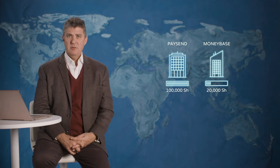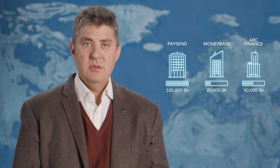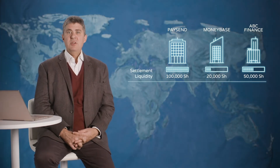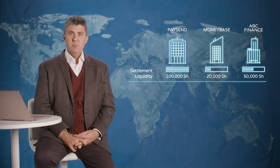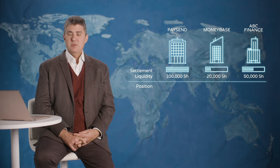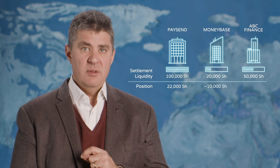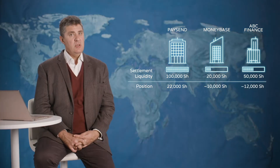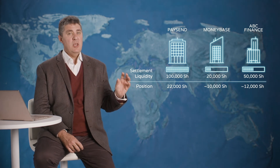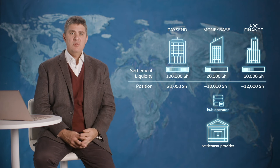Let's stick with Multilateral Net Settlement. Thinking back to PaySend and MoneyBase, let's say PaySend has 100,000 shillings and MoneyBase has 20,000 in their settlement account. Let us also assume there's a third DFSP called ABC Finance, which has 50,000 shillings in its settlement account. Before Gladys makes her payment to John, we are near the end of a settlement window. At this point, each DFSP's position is as follows: PaySend's position is 22,000, MoneyBase is negative 10,000, and ABC Finance's position is negative 12,000. The position is a representation of how much each DFSP owes to the hub operator to meet their transfer obligations.